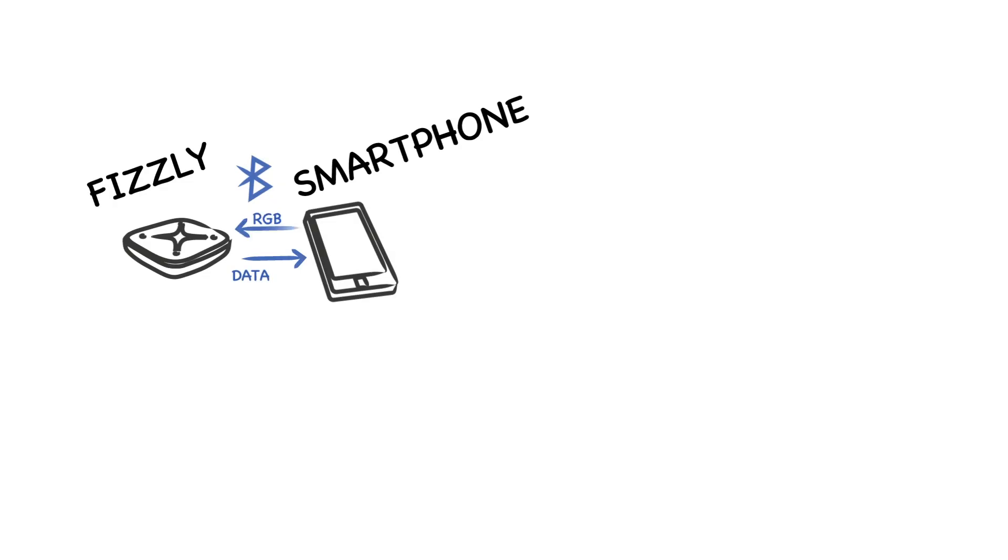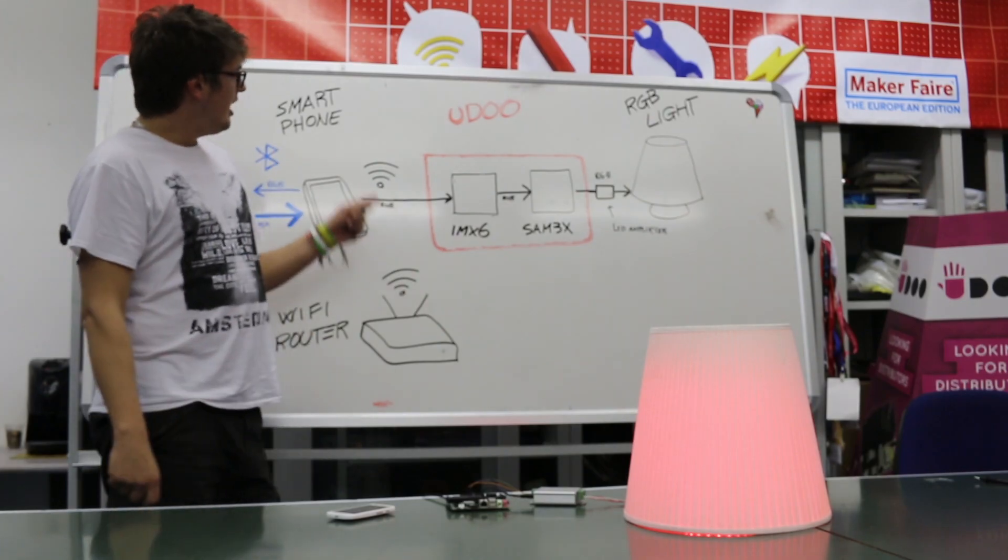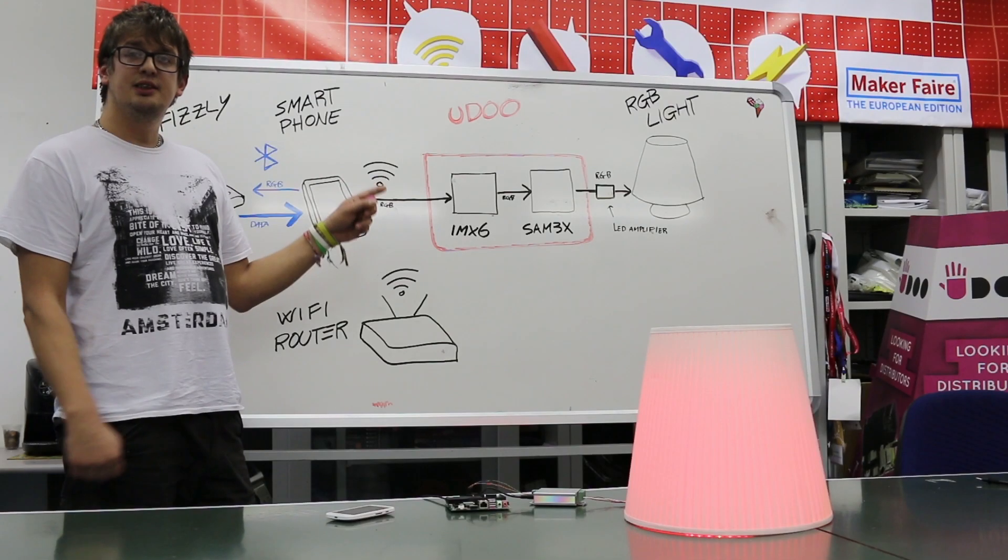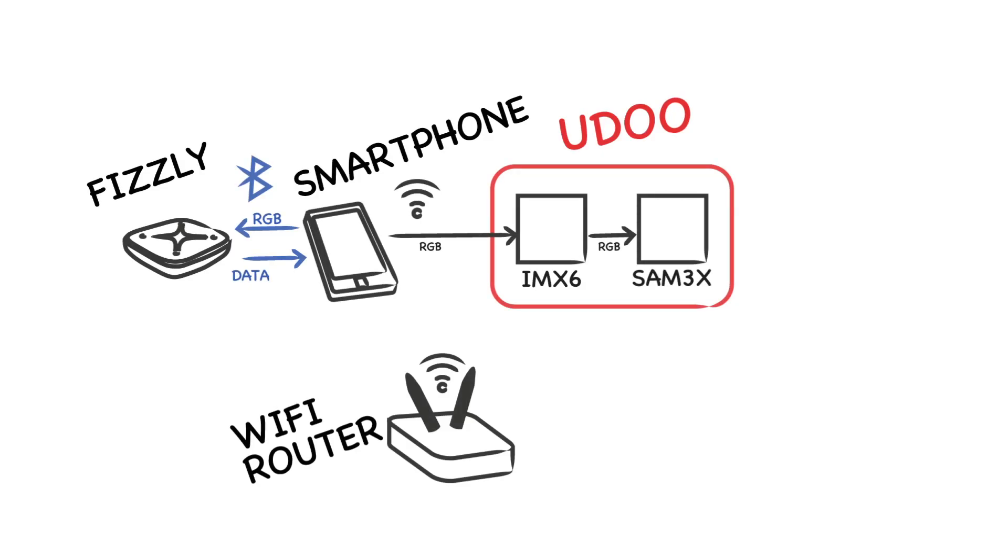Then the smartphone sends RGB data to Fizzly that changes its LED color. At the same time, the smartphone sends RGB data to Udo over a Wi-Fi connection. On the Udo board is running a Python script that reads messages coming from the smartphone. This script sends the message to a Freescale microcontroller which changes the RGB LED values.